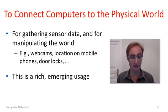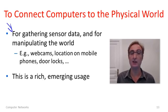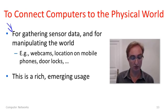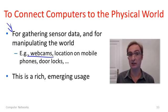And yet another interesting use of computer networks is for connecting computers to the physical world. We can gather sensor data at computers that are scattered around the network and then use the network to send that information to other places. Or we can send commands across the internet to cause actuators to affect the real world.